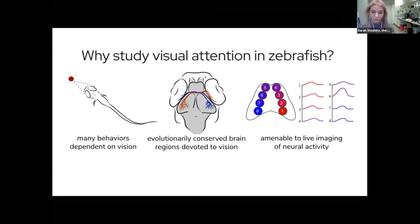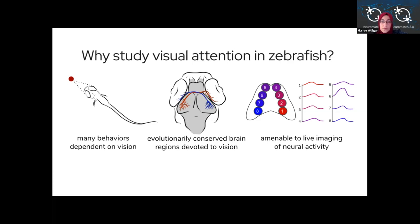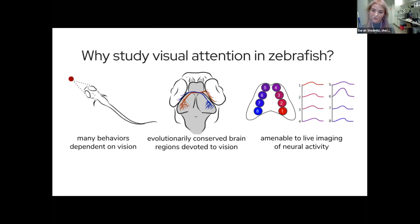The optic tectum is functionally equivalent to the superior colliculus in mammals. My favorite part about them is that they're really amenable to this fabulous live imaging of neural activity. We can do single-cell scale whole brain recordings in a freely behaving animal, which is simply not possible in other vertebrate systems.